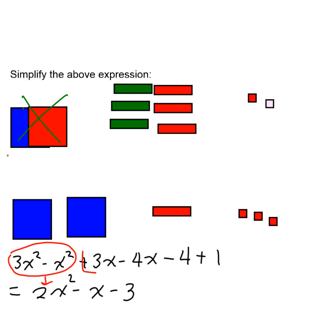What does 3 take away 4 equal? It equals negative 1. What does negative 4 plus 1 equal? It equals negative 3. That is called collecting like terms.